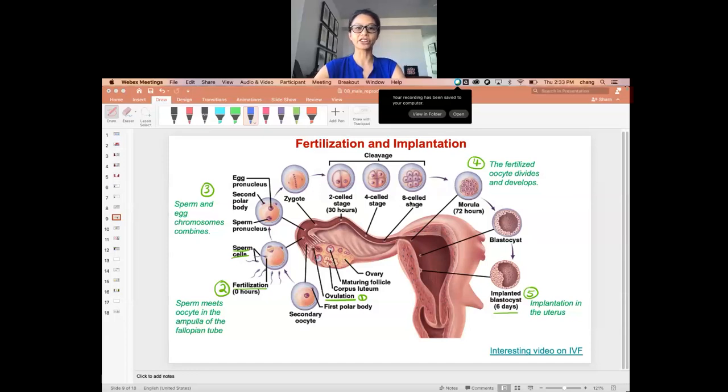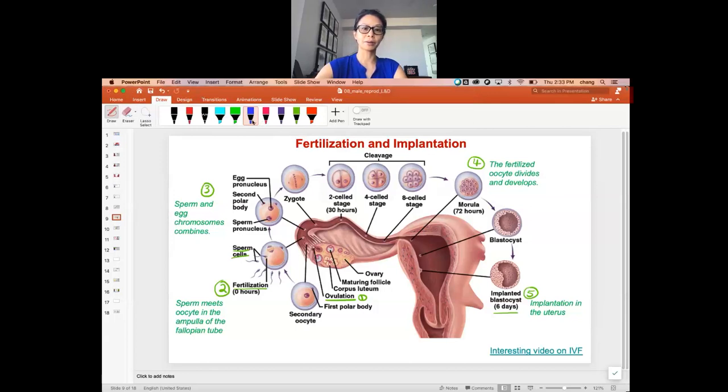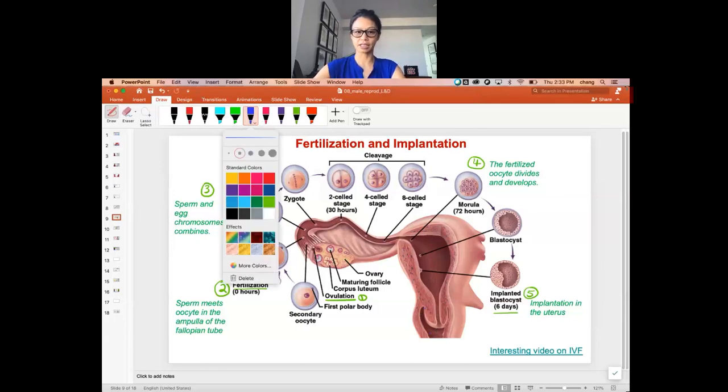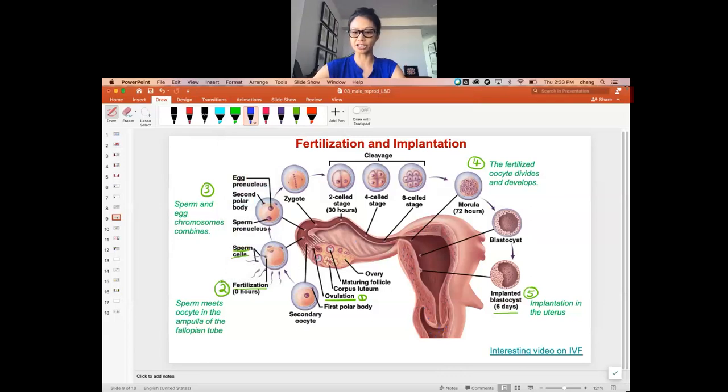All right, class. Let's talk about fertilization and implantation. I think I mentioned this before in the last week. The sperm is introduced into the female vaginal canal, into the female vagina.